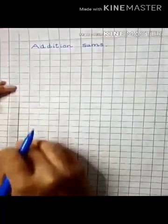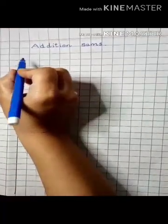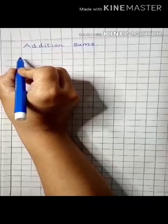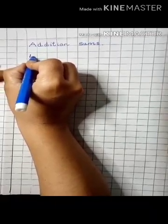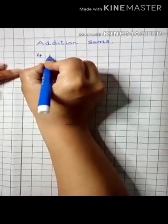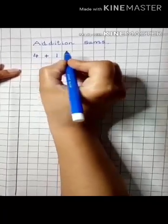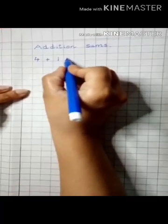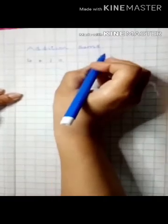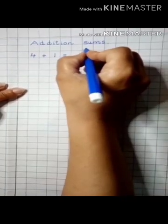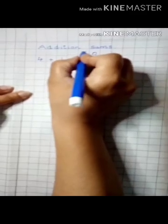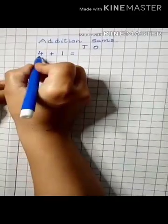Draw a margin line. You have to leave one block and write 4 plus 1 is equal to. Write here in the middle. On the top you will write 1s and 10s.